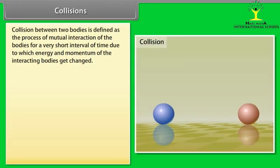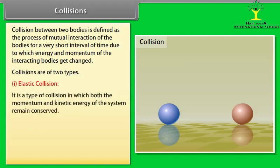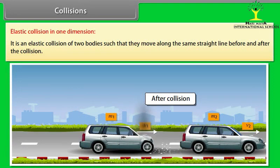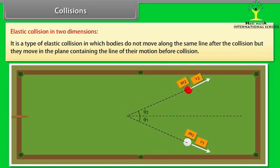Collisions. Collision between two bodies is defined as the process of mutual interaction of the bodies for a very short interval of time due to which energy and momentum of the interacting bodies get changed. Collisions are of two types. Elastic collision: It is a type of collision in which both the momentum and kinetic energy of the system remains conserved. Number 2: Inelastic collision. It is an elastic collision of two bodies such that they move along the same straight line before and after the collision. It is a type of elastic collision in which bodies do not move along the same line after the collision but they move in the plane containing the line of their motion before collision.